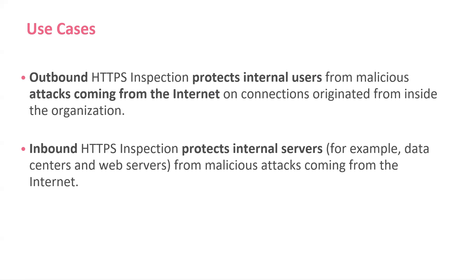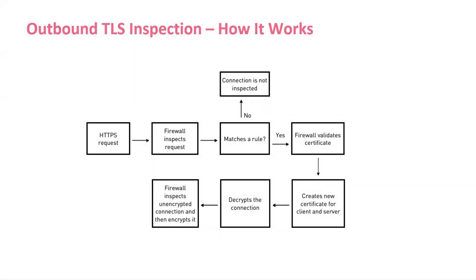We have two different use cases — one for outbound and one for inbound. For outbound: all HTTPS connections that originate from the client and connect out to a server on the internet. The gateway looks at the HTTPS requests in the HTTPS inspection rule. If the request doesn't match, the packet is not decrypted. If it matches an inspection rule, the gateway verifies the server certificate is valid, creates a new certificate, and presents it to the client. There are two HTTPS connections — one to the internal client and one to the server. It can then decrypt and inspect the packets according to security policy. The packets are then encrypted again and sent to the destination.